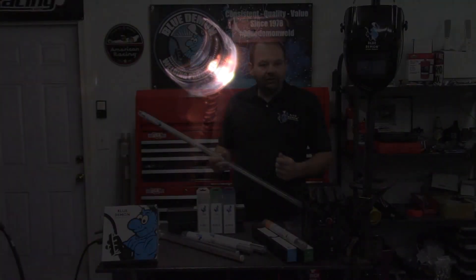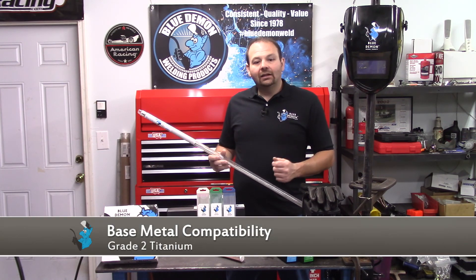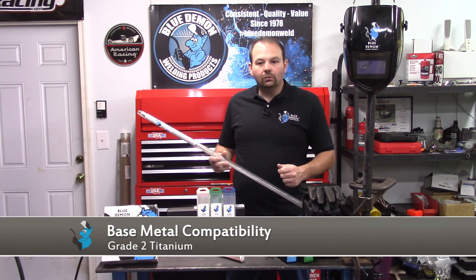Next we have TI. This identifies the filler metal as unalloyed titanium or a titanium-based alloy. Lastly, the two appended to the end denotes different variations in the composition of the filler metal and is recommended for Grade II titanium.